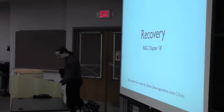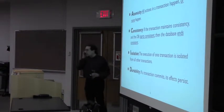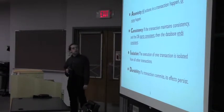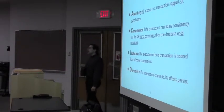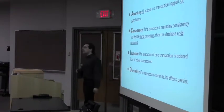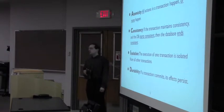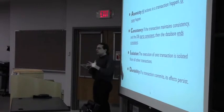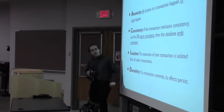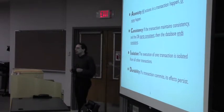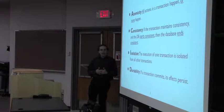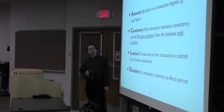Most of you have heard of this property called ACID: Atomicity, Consistency, Isolation, and Durability. This is the gold standard by which, until about 5-10 years ago, databases were judged. The four main things a transaction processing system was supposed to ensure: all transactions happen in isolation — no two transactions can interact until one commits. Consistency means if the database starts consistent and the transaction doesn't break consistency, no interleaving should produce an inconsistent state. That's the main thing we've been focusing on for the last week.